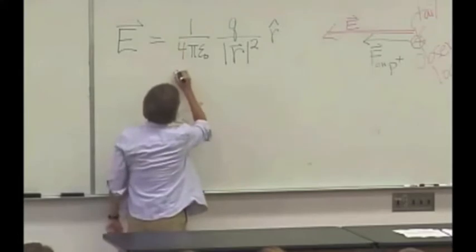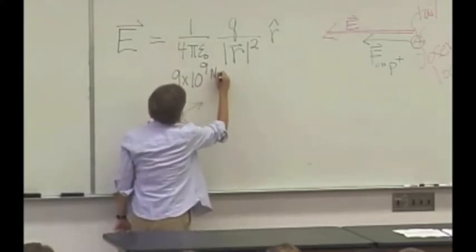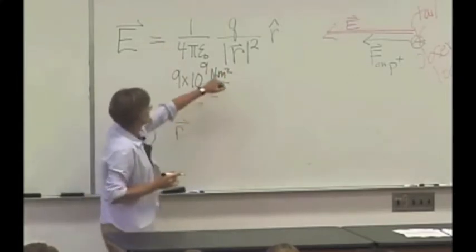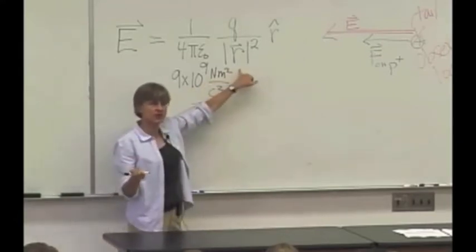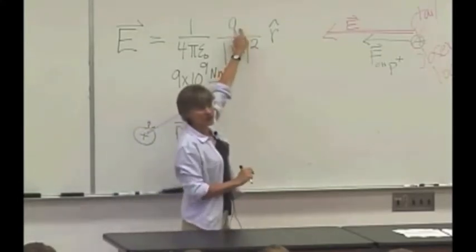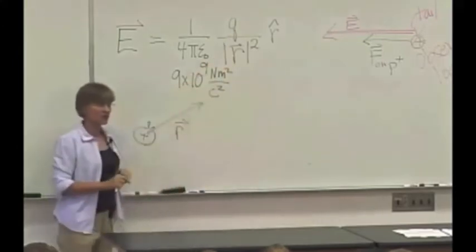There's a constant which has the value 9 times 10 to the 9th newton meter squared per coulomb squared. This is just the magnitude of this vector, so this is the 1 over distance squared dependence you were talking about at the beginning of class. It depends on the charge of the particle. If the particle is positive, it goes this way. If it's negative, it goes the other way.